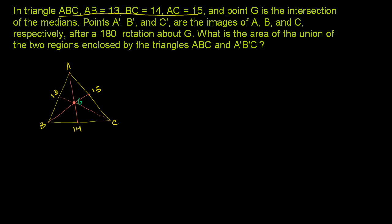Points A prime, B prime, and C prime are the images of A, B, and C respectively after a 180 degree rotation about G. What is the area of the union of the two regions enclosed by the triangles ABC and A prime, B prime, C prime? So let's draw the second triangle A prime, B prime, C prime. What we want to do is rotate each of these points about G 180 degrees.